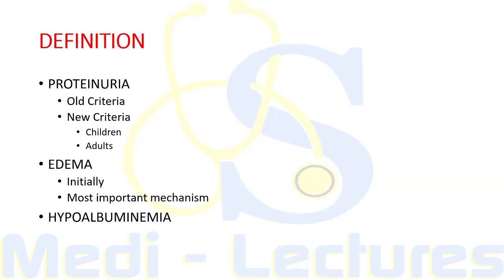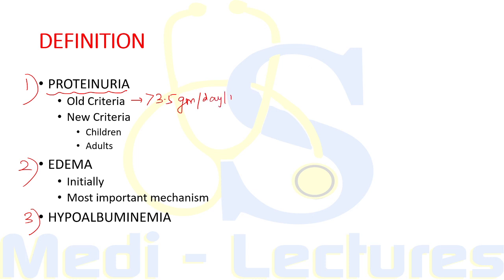In defining nephrotic syndrome, the presence of three findings is essential: first is proteinuria, second is edema, and third is hypoalbuminemia. The proteinuria in nephrotic syndrome can be defined according to two criteria. The older, well-known criteria suggests proteinuria more than 3.5 grams per day per 1.73 meter square surface area.